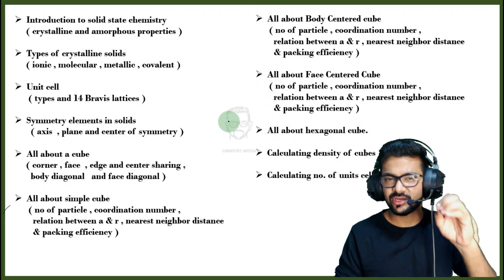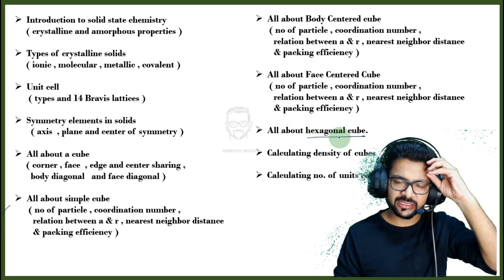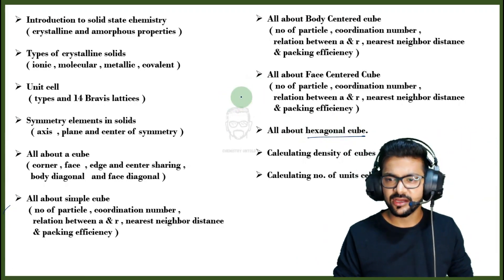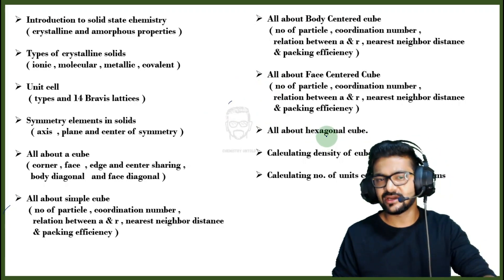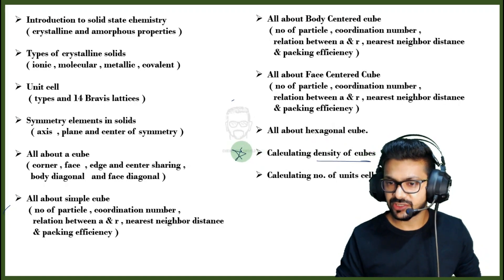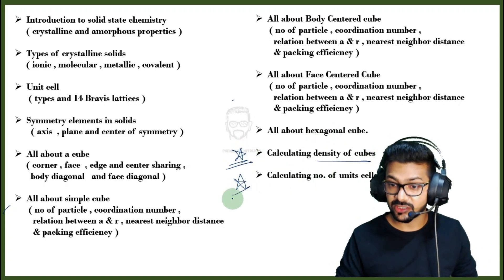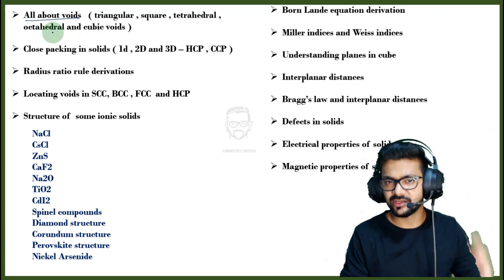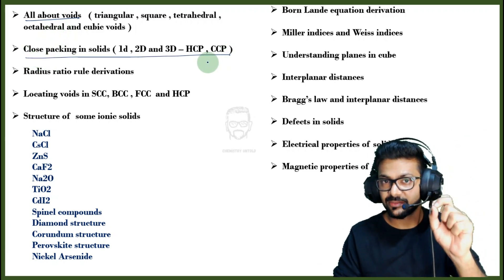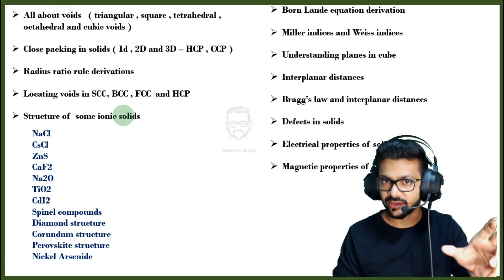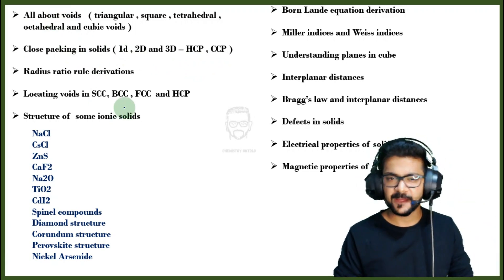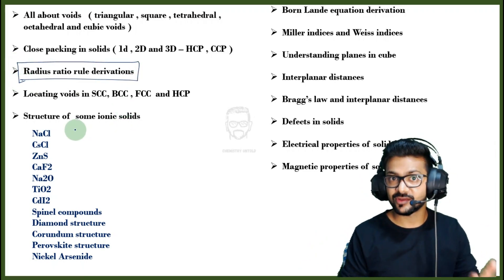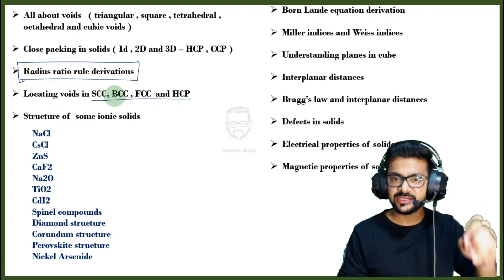I have also covered hexagonal close packing, AB and ABA packing, density of a unit cell, and all about voids. Closed packing is explained thoroughly. I have also covered topics like the radius ratio rule with derivations, and the location of voids in simple cube, BCC, FCC, and HCP.